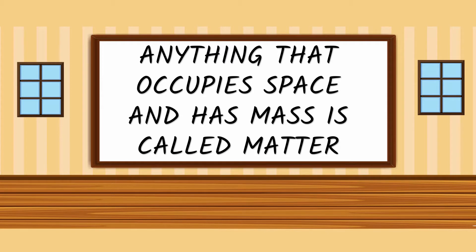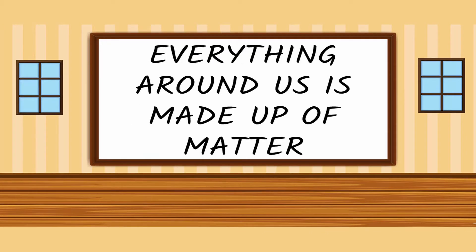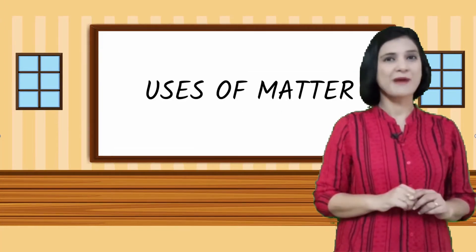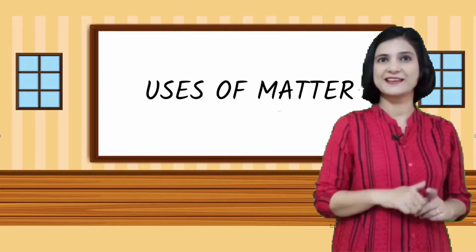A very good morning my dear budding scientists. Welcome back to the science class. I'm sure you loved learning about the states of matter with me and now you already know certain facts about matter — like anything that occupies space and has mass is matter. So technically speaking everything around us is made of matter. Matter comes in three forms: solid, liquid and gas. After exploring the forms of matter, let's try to learn about their uses.